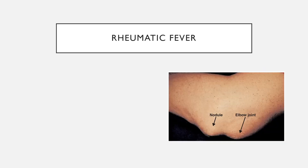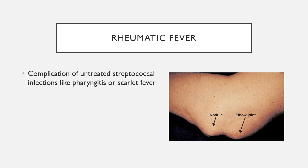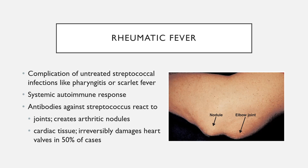Next we have rheumatic fever, which is actually an autoimmune complication. It can arise if a streptococcal infection — such as pharyngitis or scarlet fever — goes untreated. It used to be fairly common in the United States, but now that strep throat can be recognized and treated with antibiotics it is far less common. As a result of the untreated infection, the body develops an autoimmune response where antibodies generated against the streptococcal pathogen cross-react with surface proteins on parts of the body, especially the joints.